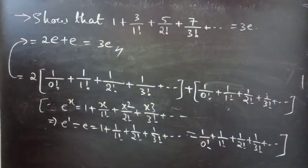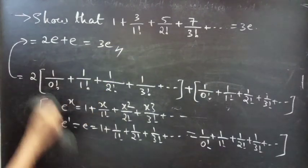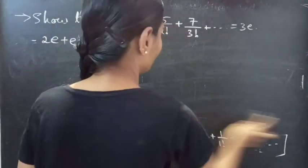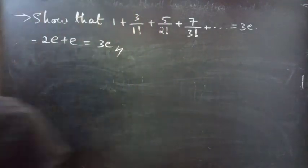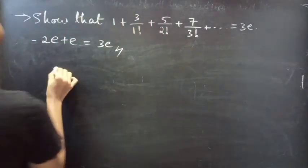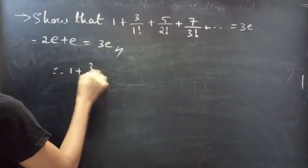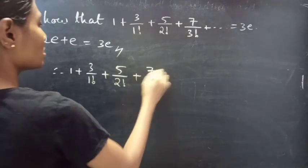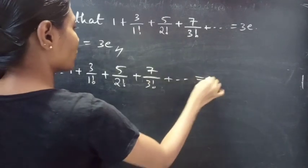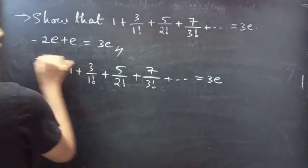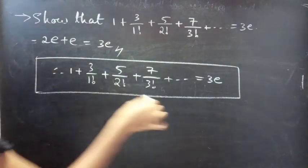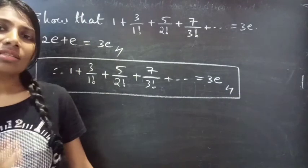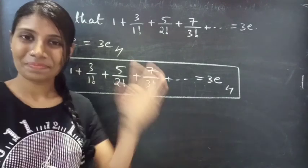Therefore, the sum of the given series is equal to 3e. Therefore, 1 + 3/1! + 5/2! + 7/3! + ... = 3e. This completes the problem. Hope you understand. We'll see you in the next video. Bye bye.